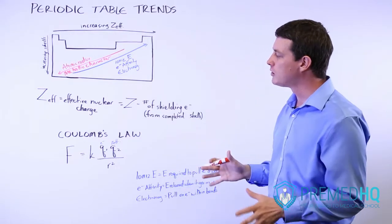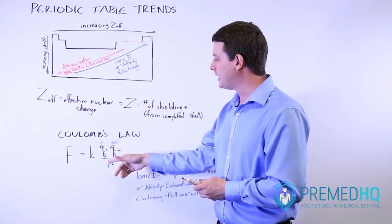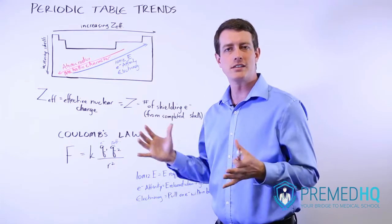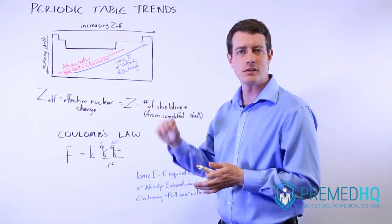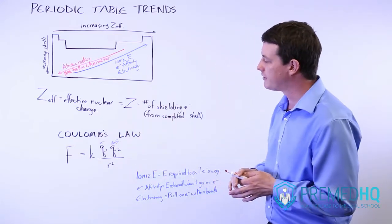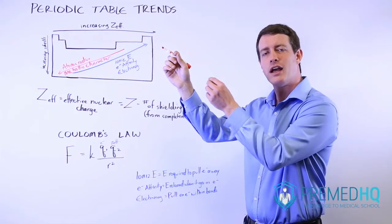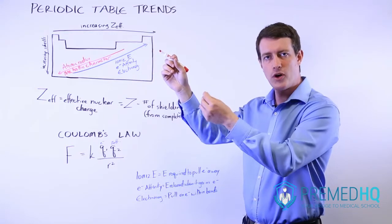And so what we do with Coulomb's law and with atoms is we look at Q1 as the charge of that valence electron. So that will always be constant. It will be the charge of one electron. Q2 is going to be the Z effective, and that's the other point charge. So you have an electron out here, and you have the nucleus, which is the other point.